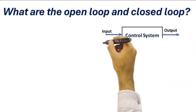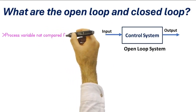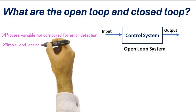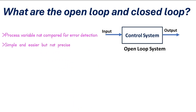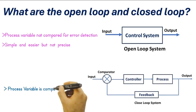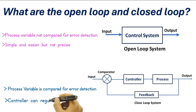What are open loop and closed loop systems? In an open loop system, the process variable is not compared for error detection, and no action is taken in response to the feedback signal. It is simple and easier but not precise. In a closed loop system, the process variable is measured and compared to a set point for error detection, and the controller can regulate process variables using a feedback signal.